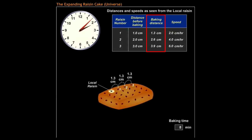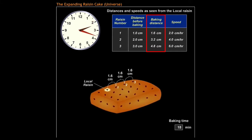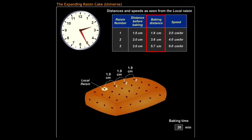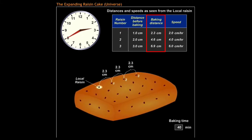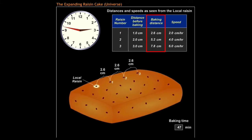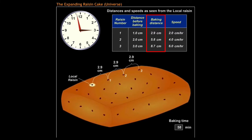Let's now watch the expansion again, this time paying attention to how the distances of other raisins change during baking. Notice that even though the cake expands uniformly, the distances from the local raisin to the more distant raisins grow at a faster rate.